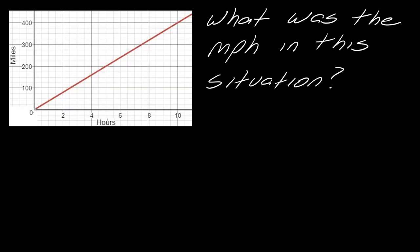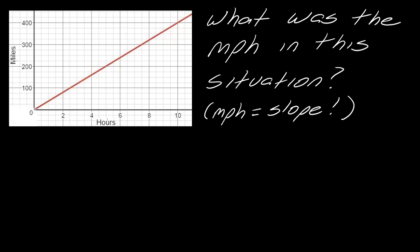Let's look at some actual applications versus these theoretical math examples. Here's one situation — this is the number of miles driven over hours in the week. The question is: what is the miles per hour? You can figure that out because miles per hour is actually just slope. So if you figure out the slope of this line, you will have determined the miles per hour. Pause the video, try to find the slope of this line, then hit play when you're ready.